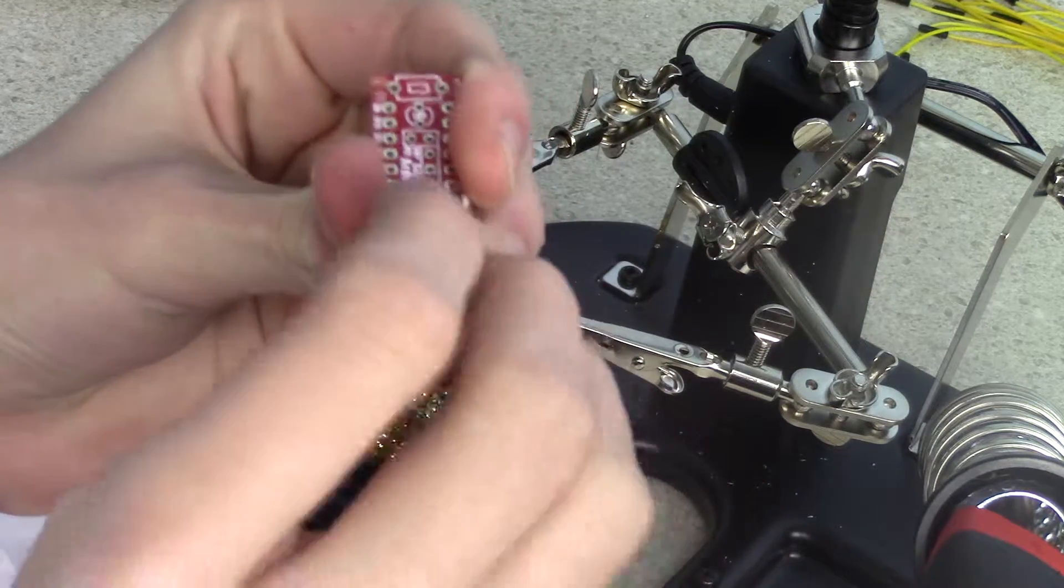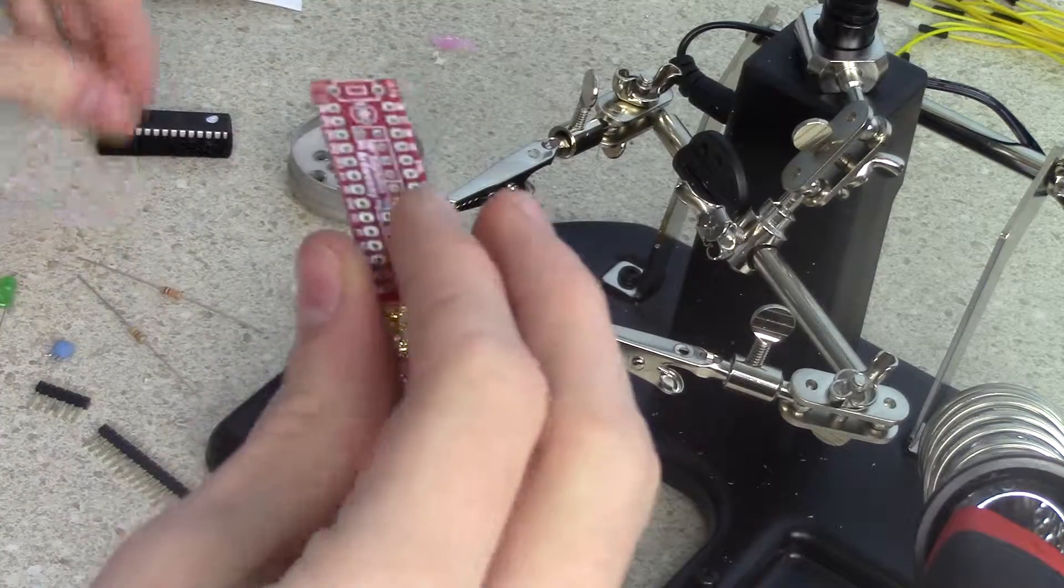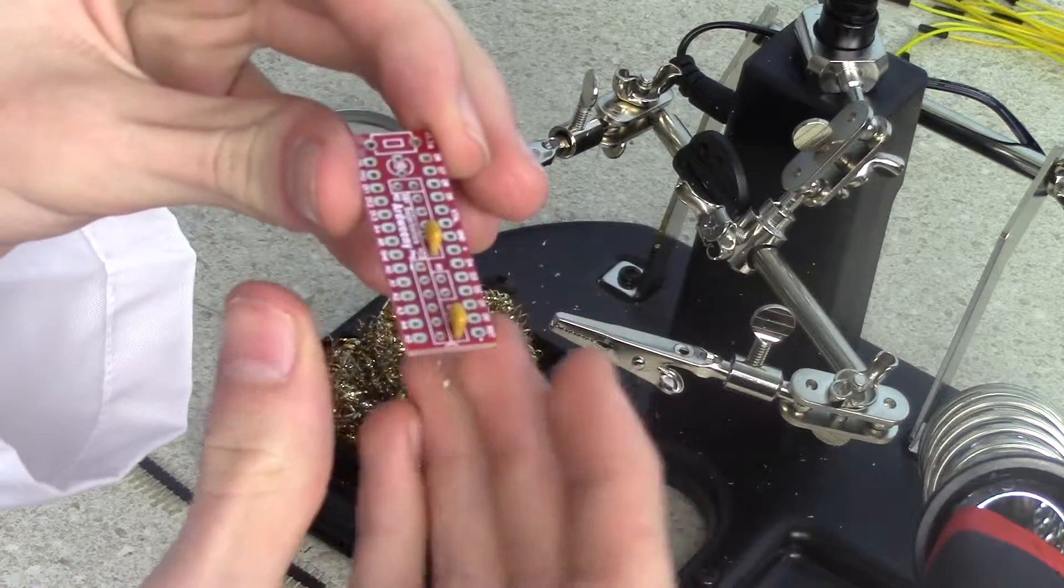A good way to improve your soldering skills is to buy about 10 of these and put them together. As always, the Arduino is linked in the description.